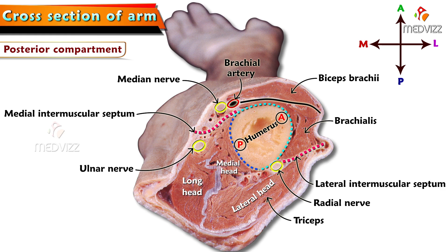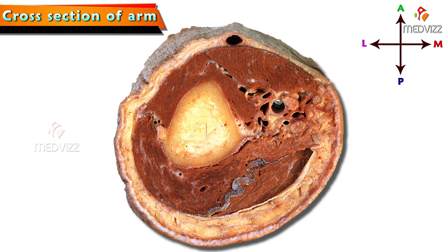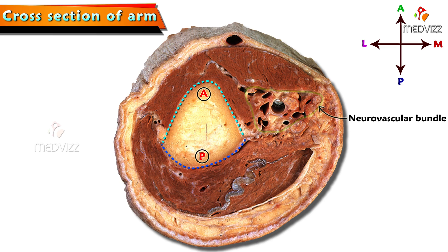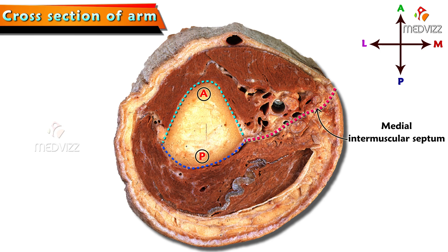We shall see one more section to understand again. So here is one more section — let us just revise once to identify the structures. This is the posterior surface of the shaft of the humerus which is flat, and here is the anterior surface which is almost tapering giving a triangular appearance. Anteromedially we can see a large neurovascular bundle on the medial side, and posterolaterally a small neurovascular bundle. This is the medial intermuscular septum and this would be the lateral intermuscular septum.